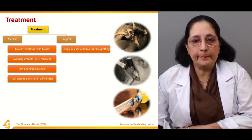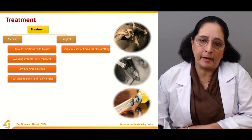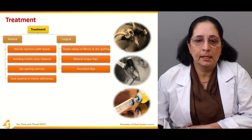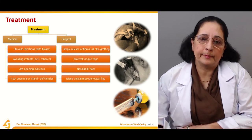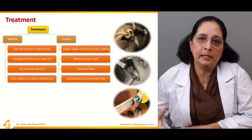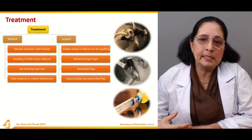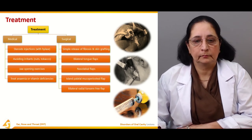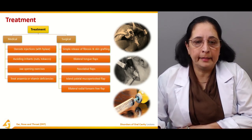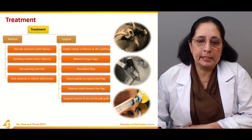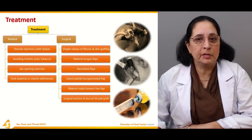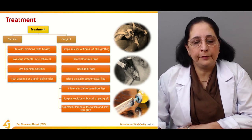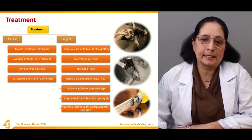Surgical treatment includes simple release of fibrosis and skin grafting, bilateral tongue flaps, nasolabial flaps, island partial mucoperiosteal flaps, bilateral radial forearm free flaps, surgical excision and buccal fat pad graft, and superficial temporal fascia flap with split skin graft. There are many different surgical options for treatment of this condition.